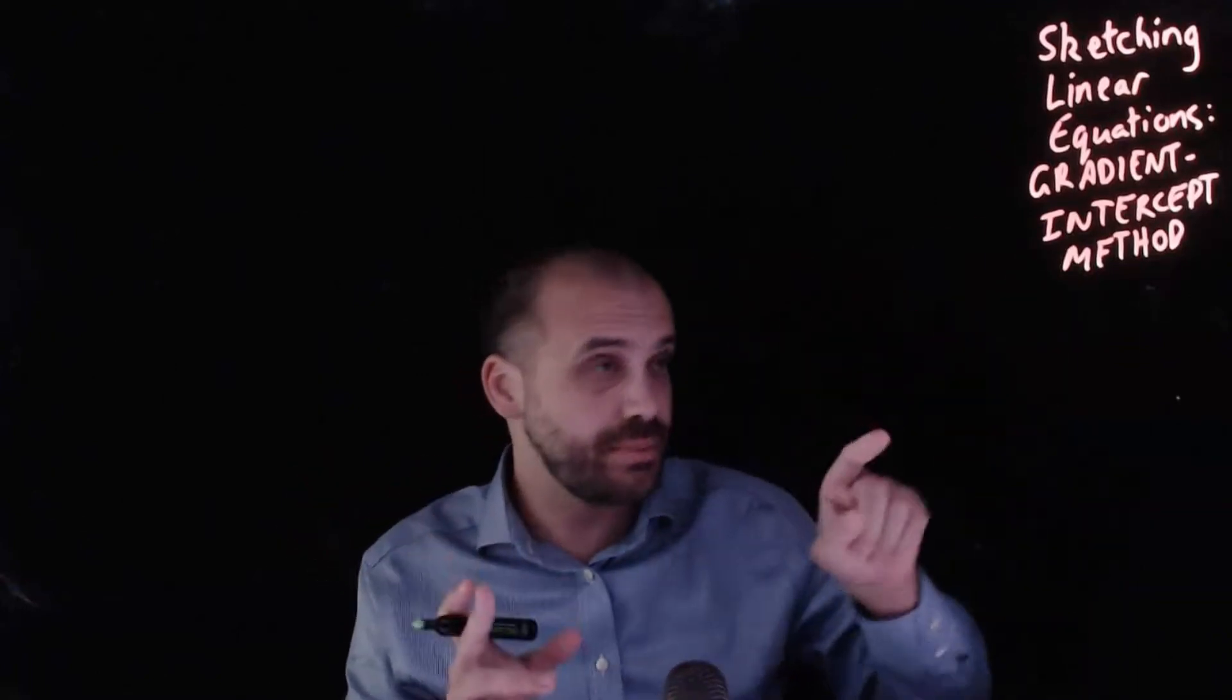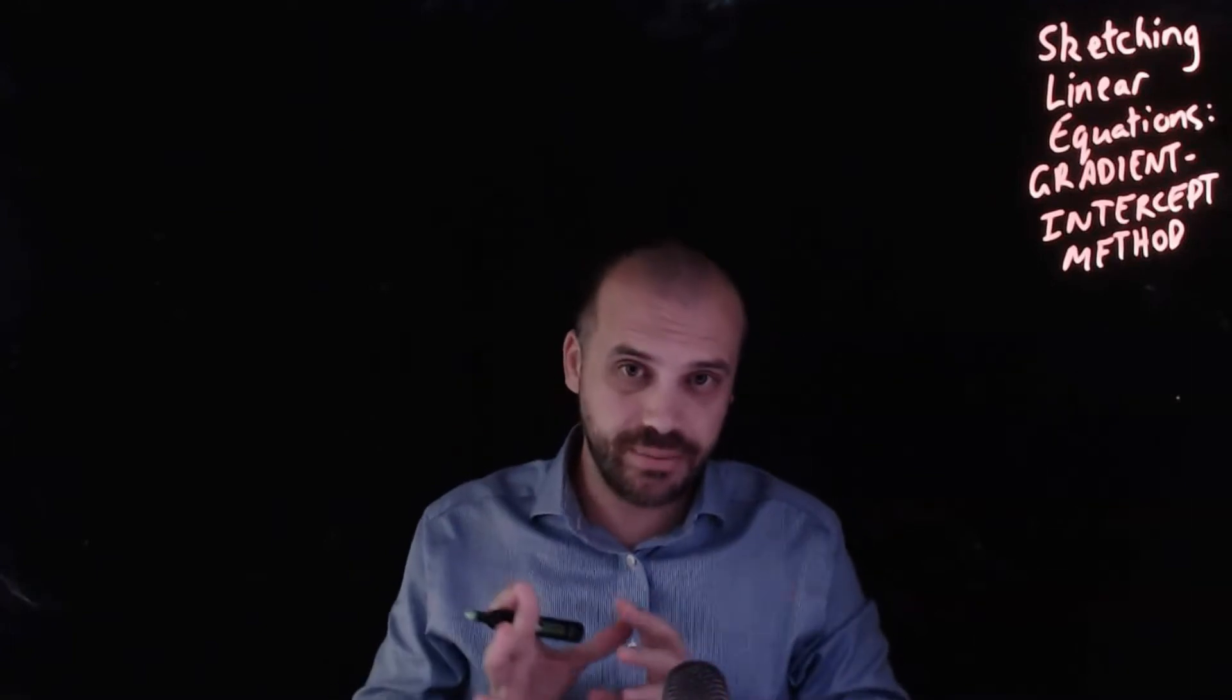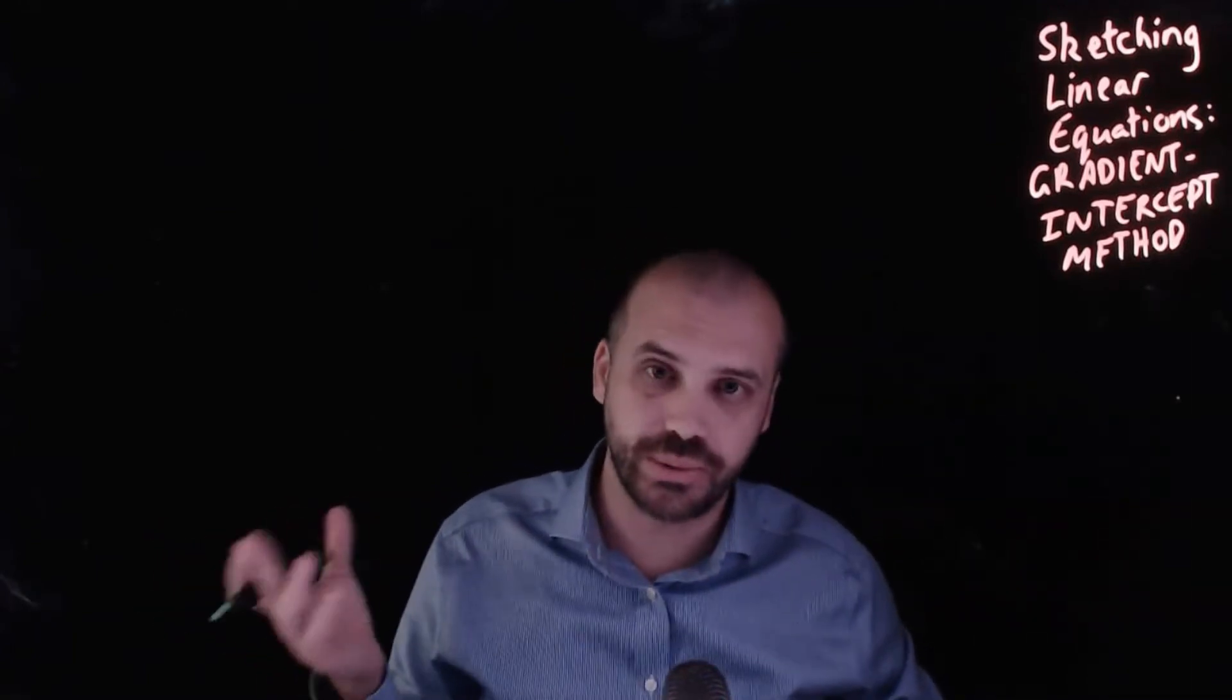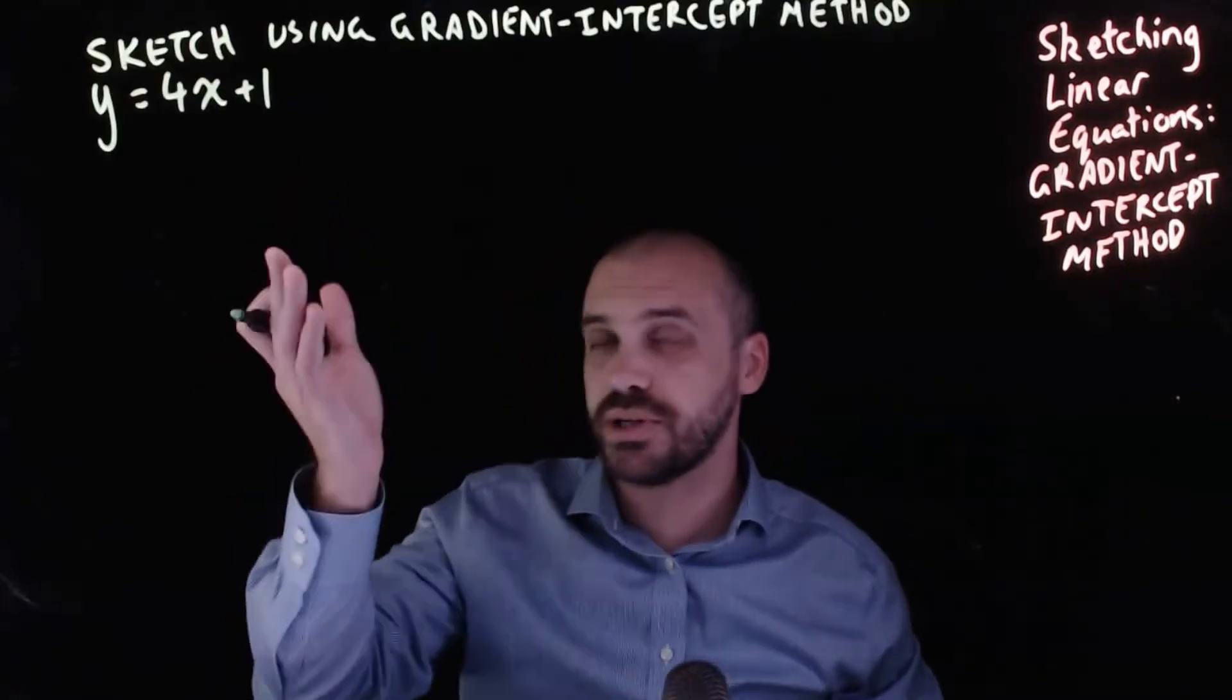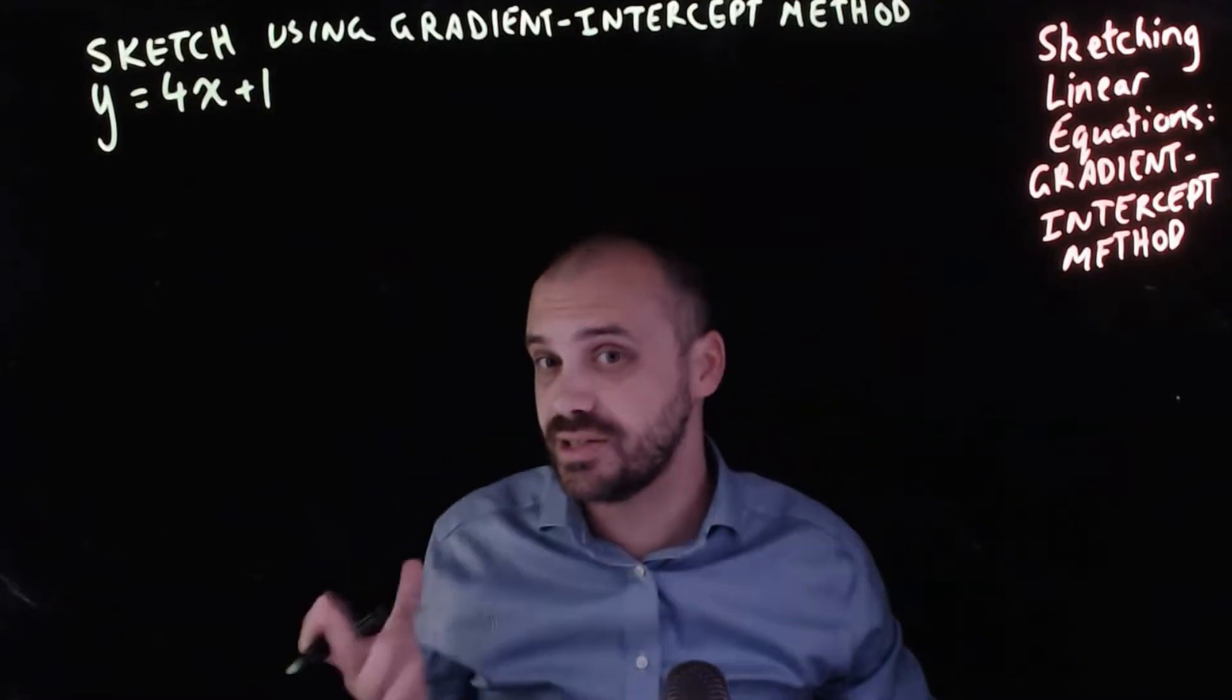So sketching linear equations, this time I'm going to do the gradient intercept method. Now I'm going to show you an example of the gradient intercept method first and then I'm going to explain to you why on earth you would want to know it. So this is what we're going to sketch: y equals 4x plus 1, and like I said, we're going to use the gradient intercept method.